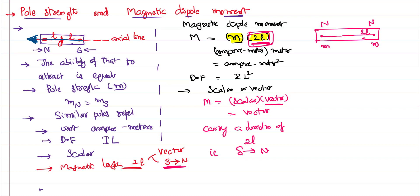So the magnetic moment has the direction of the magnetic length, which is from the south pole to the north pole. Both the magnetic moment and the magnetic length share the same direction — from south to north.